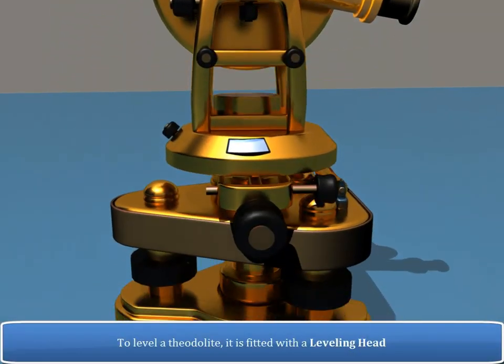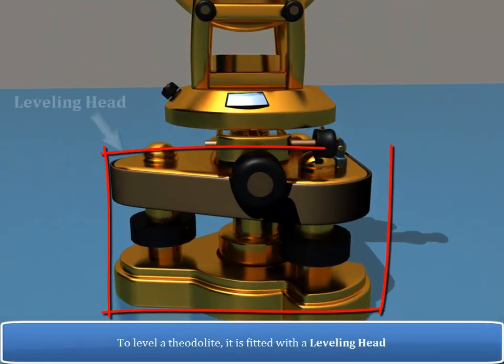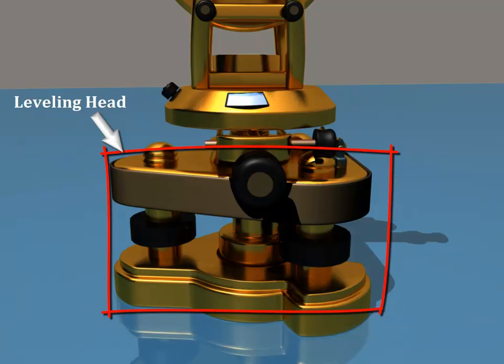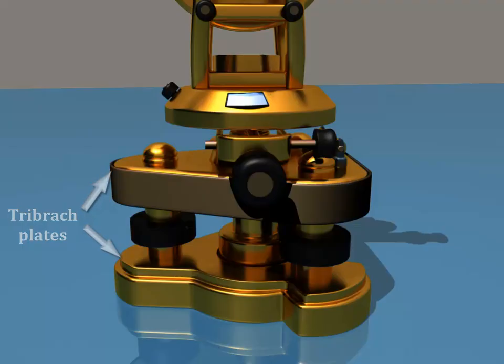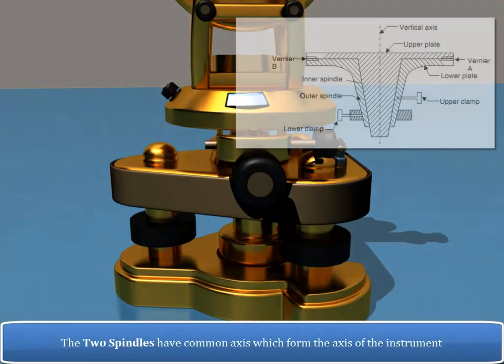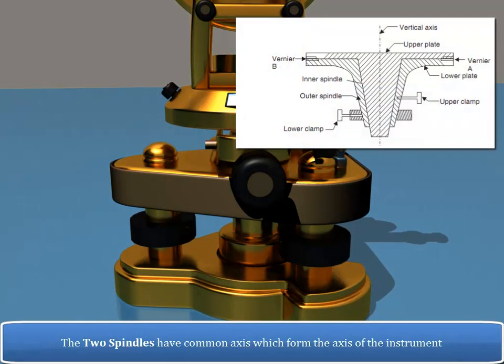To level a Theodolite, it is fitted with a leveling head. Leveling head consists of two parallel triangular plates known as tribrach plates. The two spindles have common axis which form the axis of the instrument.